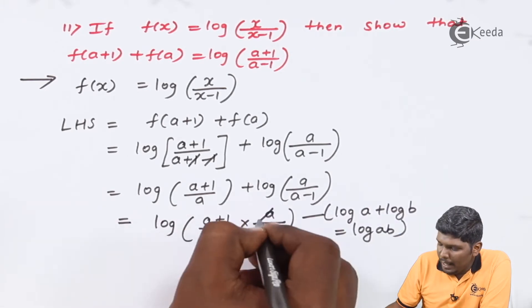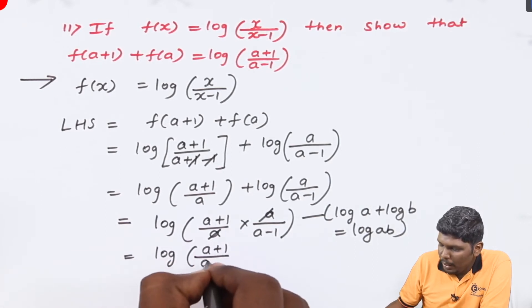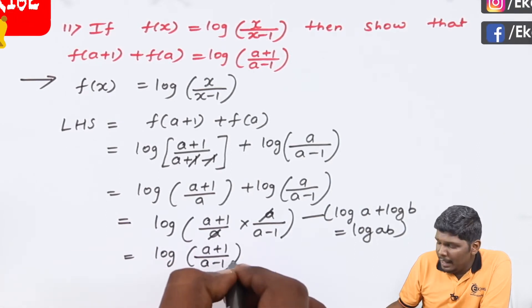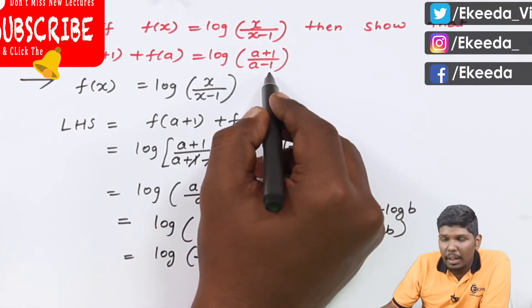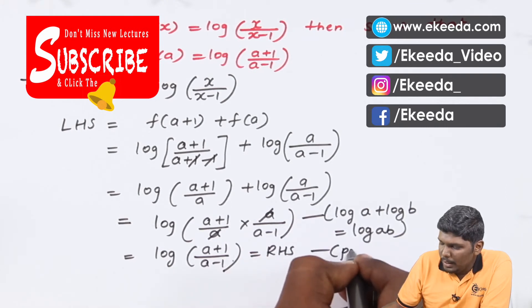Here a will be cancelled and we will get log((a+1)/(a-1)). And that is exactly what we want in the RHS. So, that equals RHS and the sum is proved.